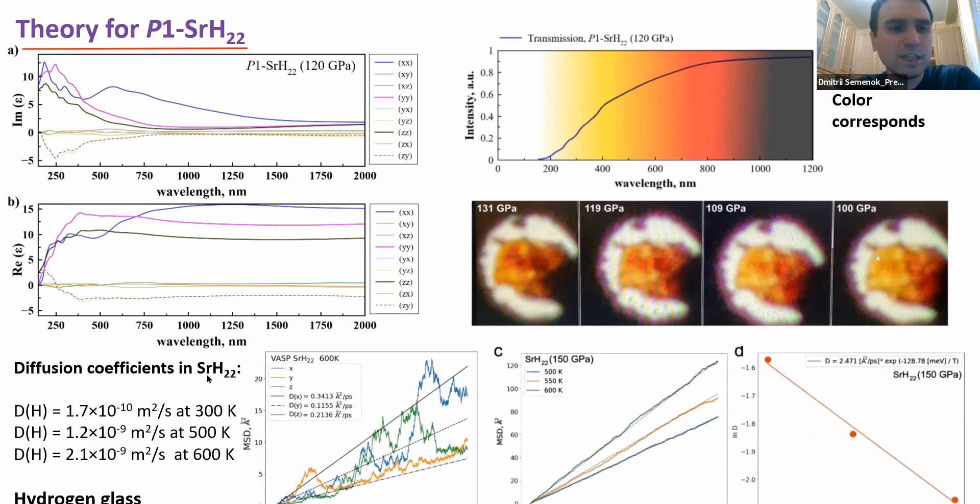We calculated also diffusion coefficients for hydrogen in this compound strontium H22 using two different methods. It's standard molecular dynamics in VASP and extended molecular dynamics to 300 picoseconds using molecular learning interatomic potentials for strontium and hydrogen, and found that diffusion coefficient is actually high and the hydrogen inside of the structure will move. It will not form stable, especially at high temperatures 500-600 Kelvin, stable sublattice with defined position of hydrogen molecules or hydrogen ions. They will move, so it will not be solid hydrogen sublattice. It will be hydrogen glass or liquid hydrogen or amorphous hydrogen sublattice, while the strontium sublattice is solid and plays a role of sponge for this liquid hydrogen glass.